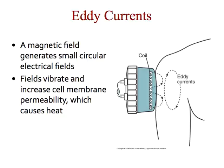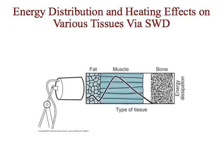Eddy currents are when a magnetic field generates small circular electrical fields. These fields vibrate and increase cell membrane permeability, which also causes heat. Small eddy currents move in the direction of the magnetic field; rotation, movement, and vibration in the tissue results in heat. The greatest eddy current activity occurs in tissues high in conductivity — blood and muscle. Heat is created by resistance in the tissue, and there is the greatest resistance in muscle. This is why shortwave diathermy can heat deeper tissue without overheating superficial tissue.